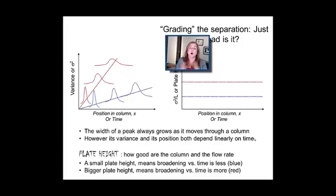So the width of a peak always grows as it moves through a column. It's hard to really do anything about that. And its variance and its position also depend linearly on time. So what that means is if you divide the two, you're going to get a constant. And we're going to use the term plate height to capture sigma squared over L, or this proportionality constant of a column. And one of the important ideas about plate height is you want it to be small. If the plate height is small, that's the slope of how the width is changing as a function of time in the column. That means you're not going to get a lot of broadening as you move it through a column. So plate height small is good.